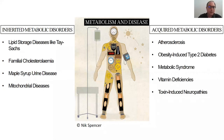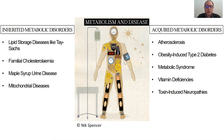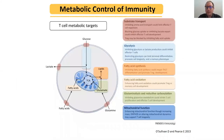We also have all the acquired metabolic disorders — atherosclerosis, obesity-induced type 2 diabetes, metabolic syndrome where diet plays a big role, vitamin deficiencies, and toxin-induced neuropathies. But over the last decade or so, it has become more and more obvious that metabolism is not just providing energy and building blocks to the body, but it can actually control cellular functions. The field where this is already well-established and better understood is in immunity.